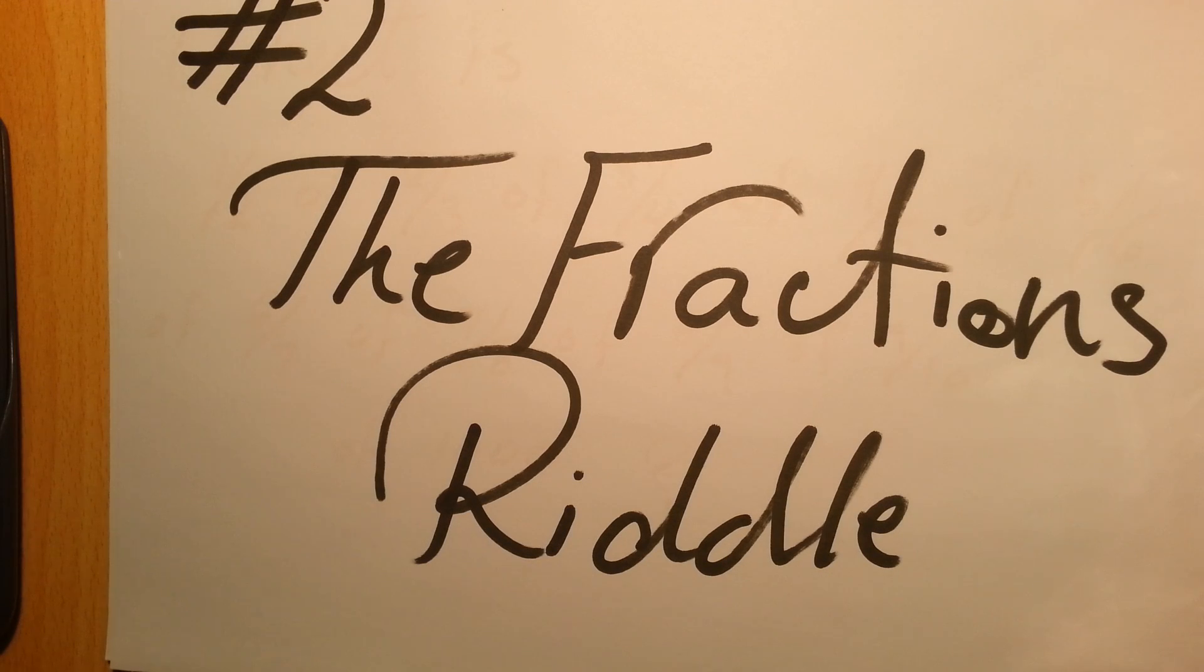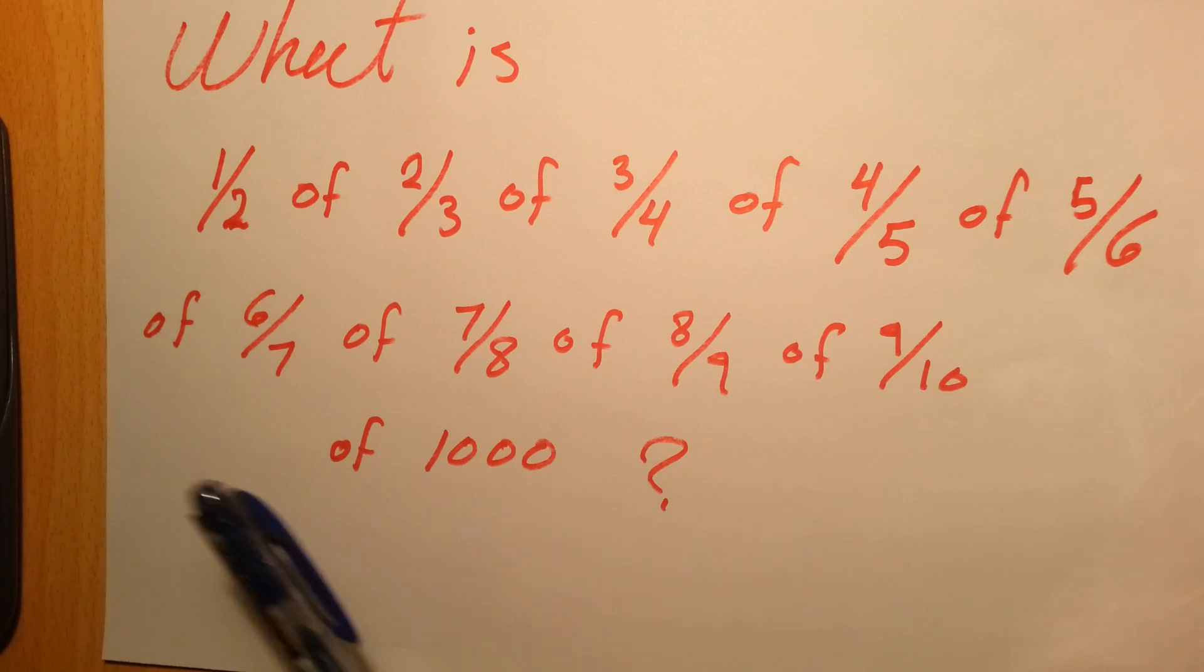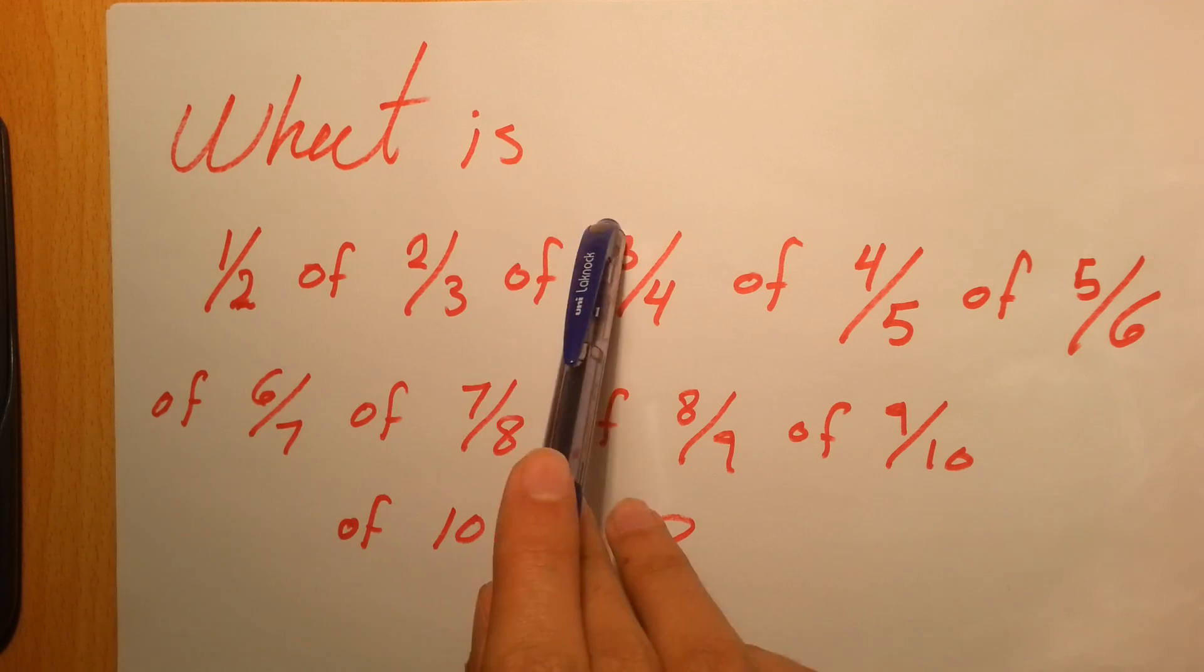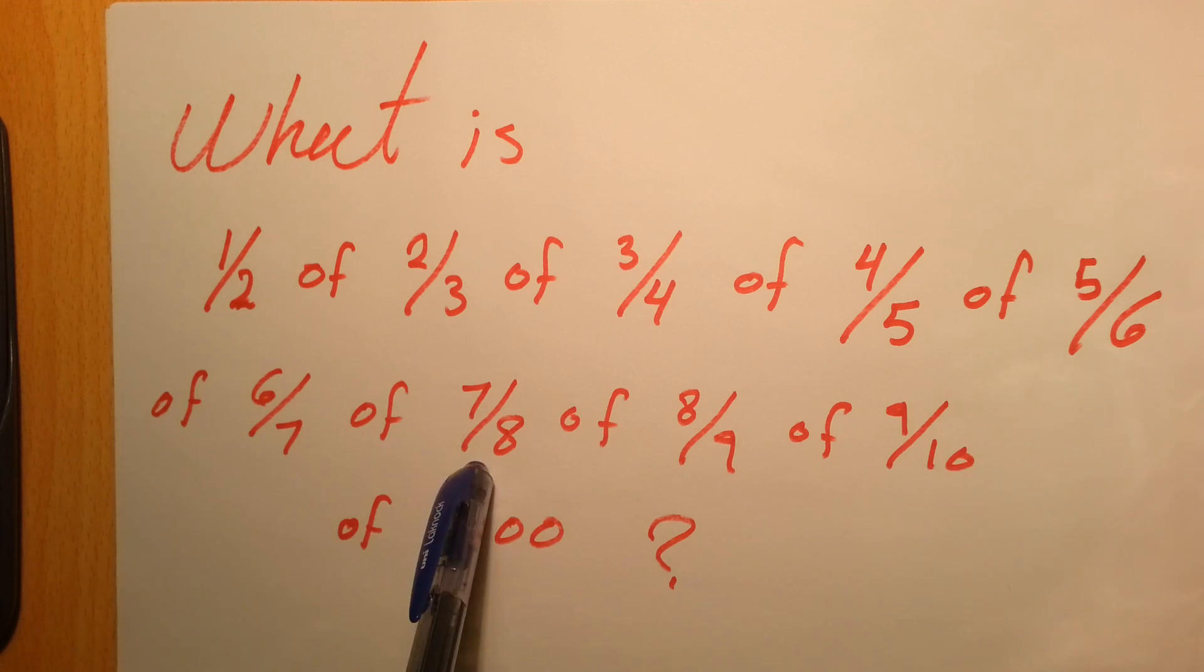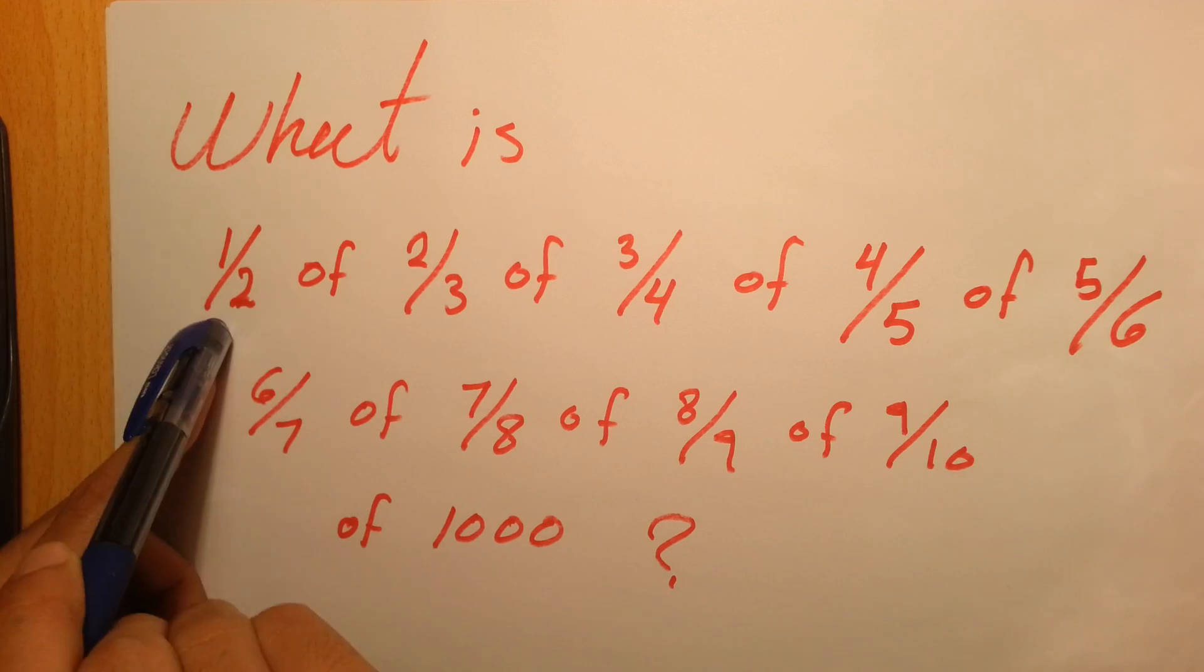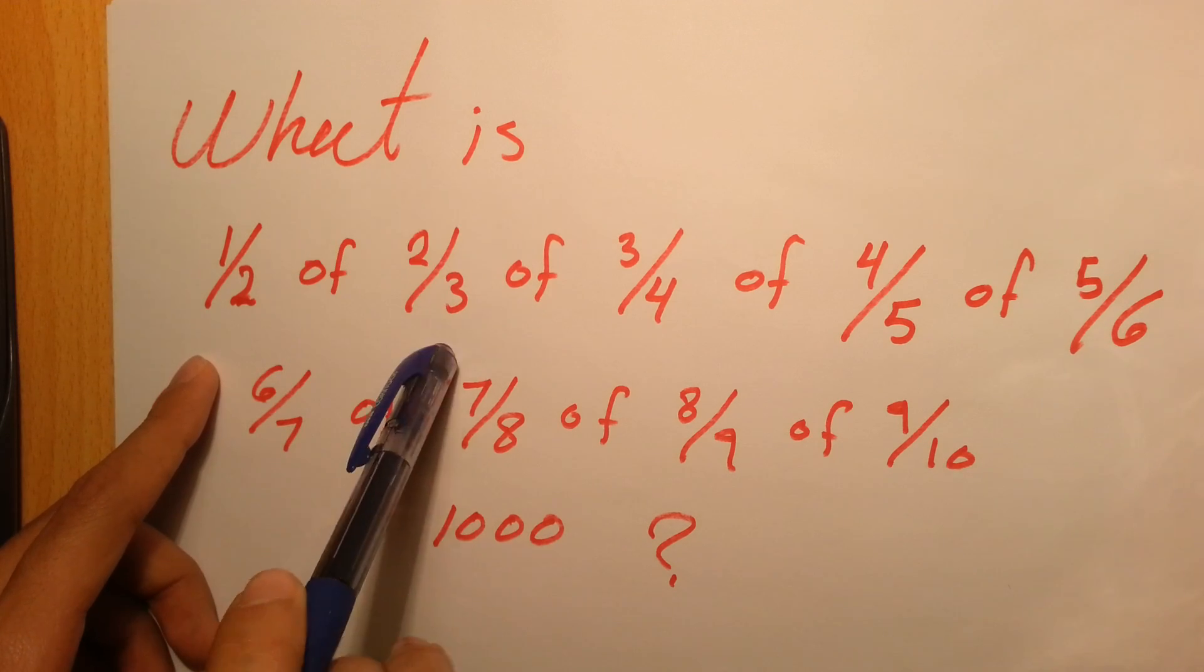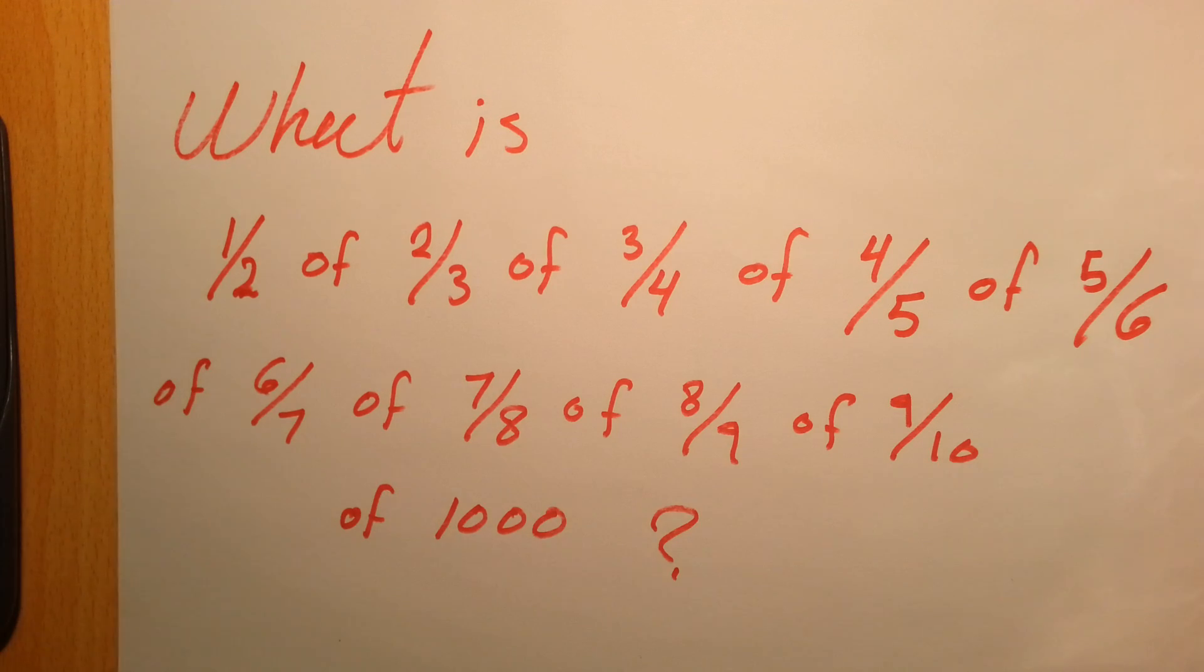The second one I called it the fractions riddle. This one asks for the product of 1/2 of 2/3 of 3/4 of 4/5 of 5/6 of 6/7 of 7/8 of 8/9 of 9/10 of 1000. Most of you will start by doing 1/2 times 2/3, so you cancel these two, it's 1/3, and then 1/3 times 3/4, cancel three and three, it will be 1/4, and you keep going like that. But there's a much easier solution.